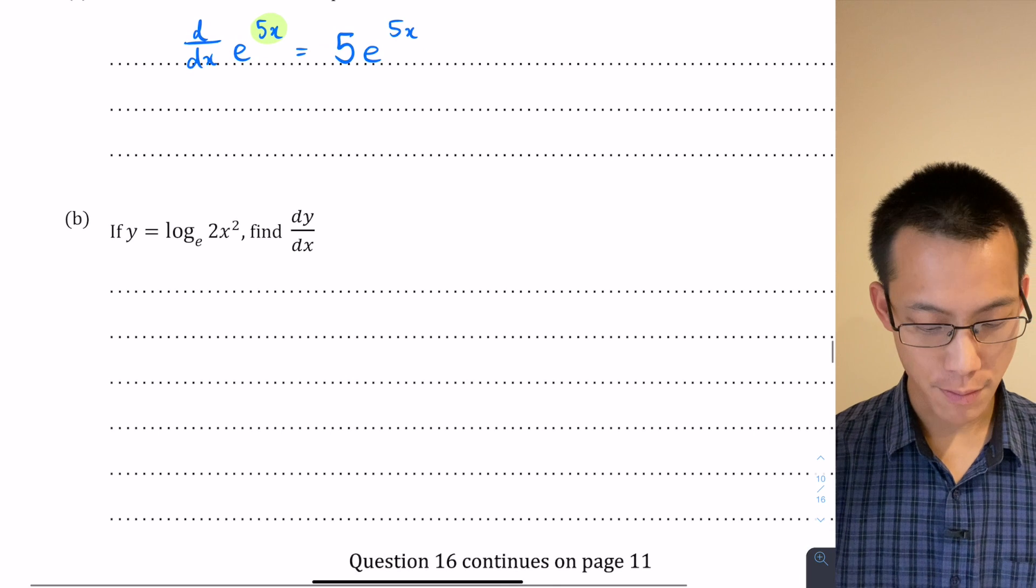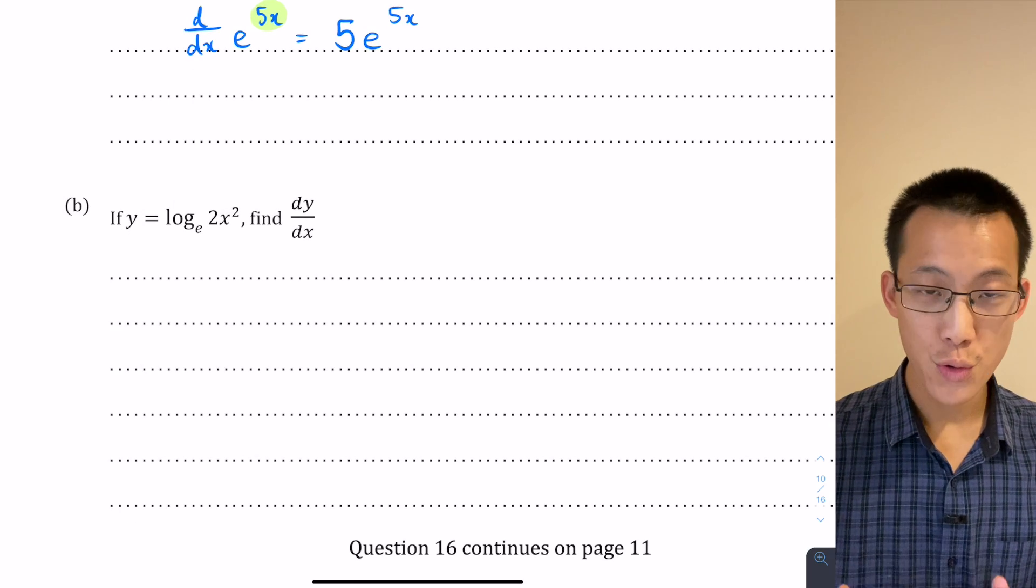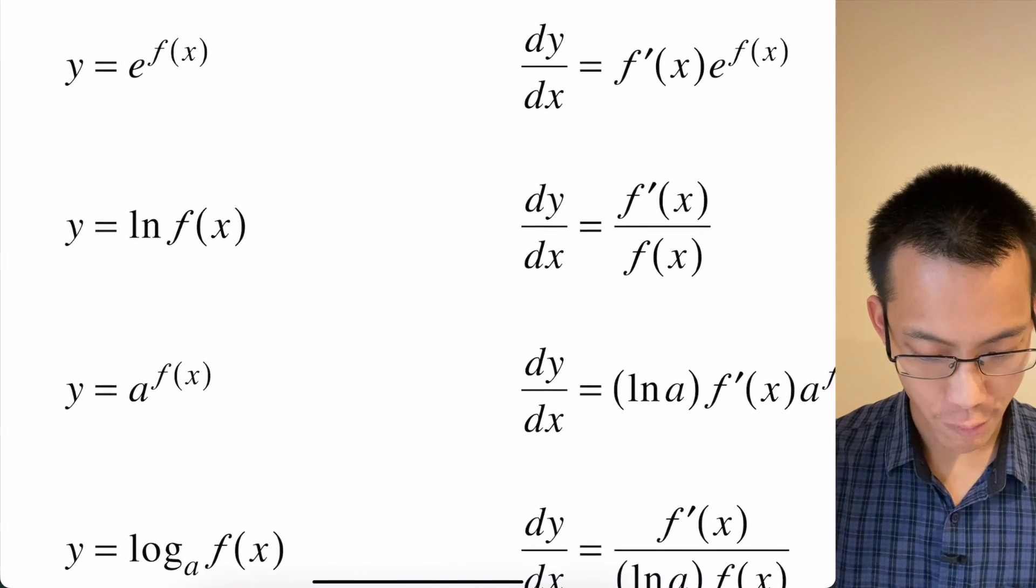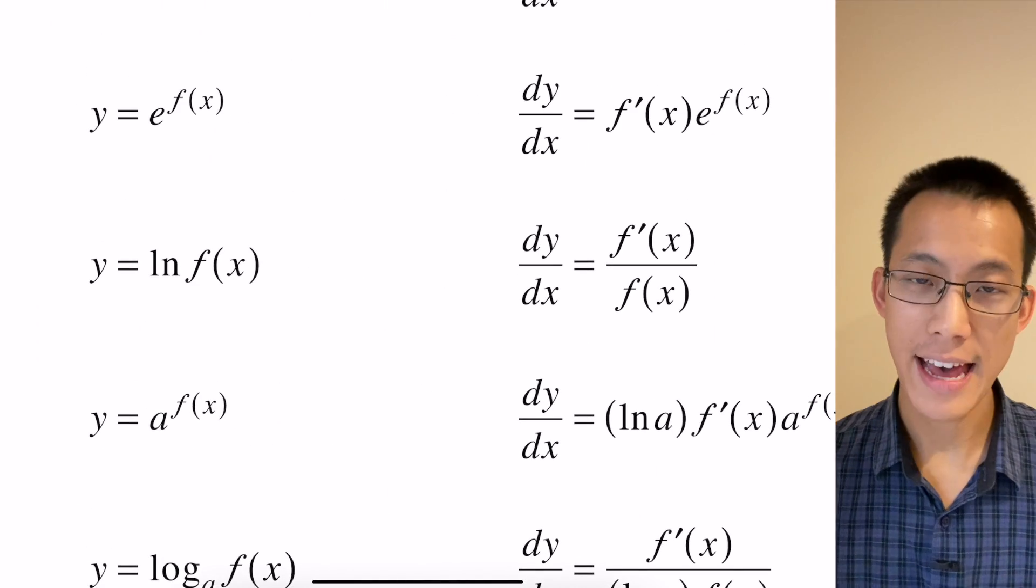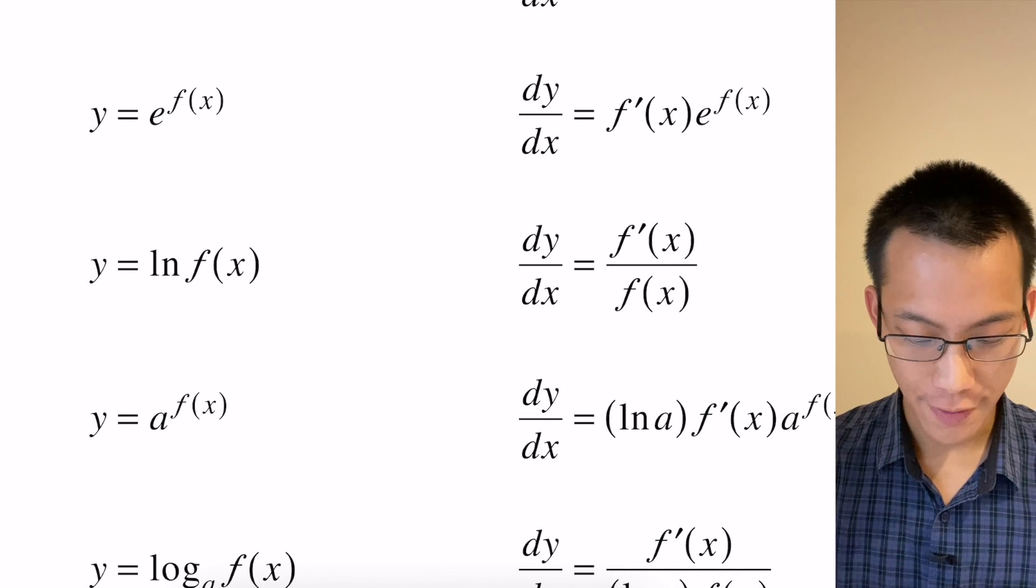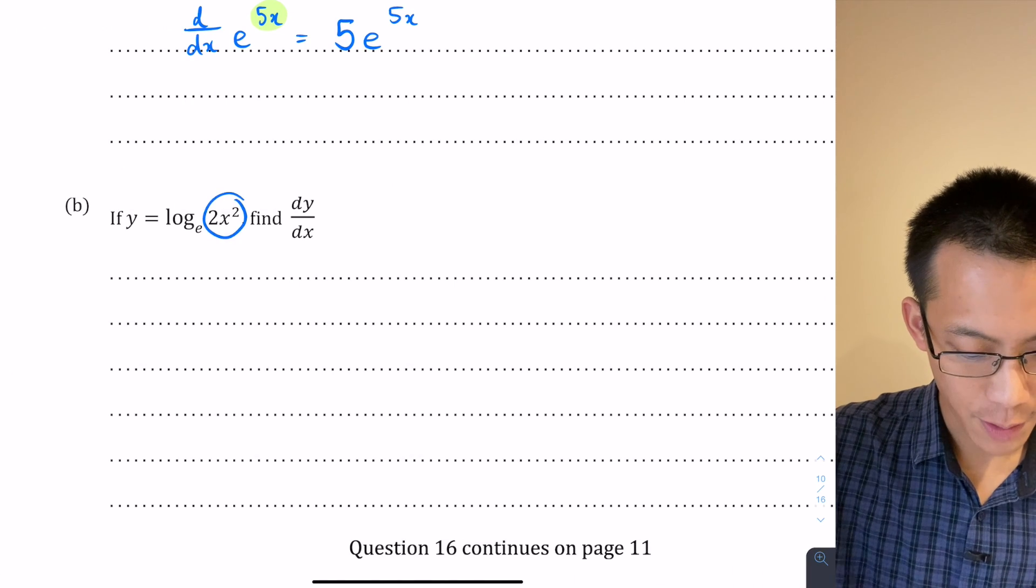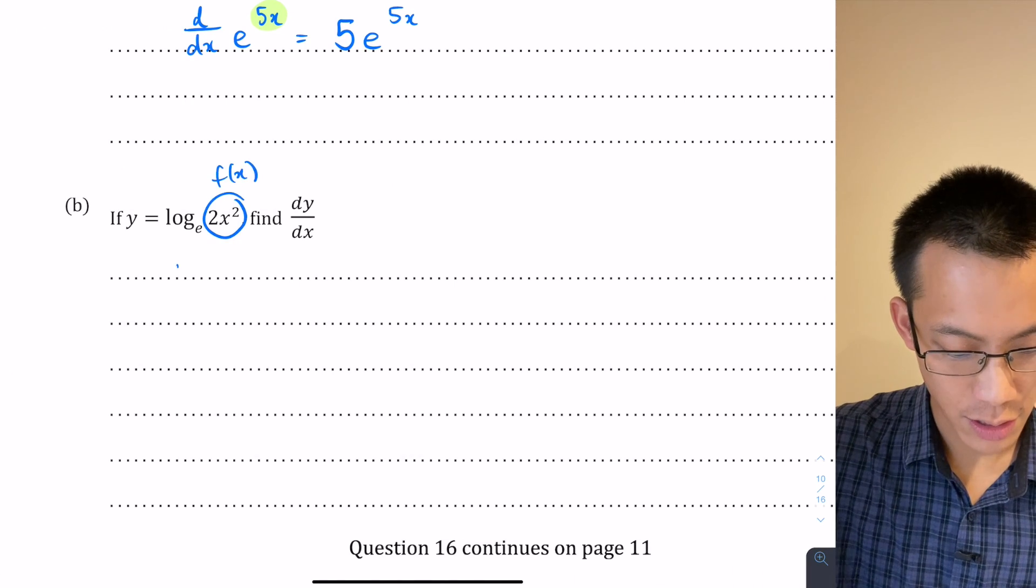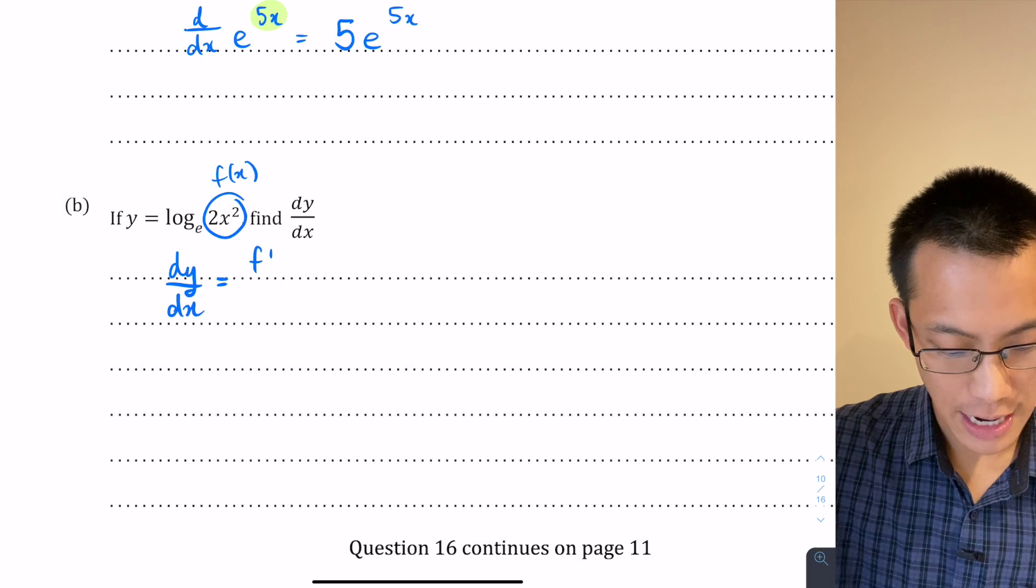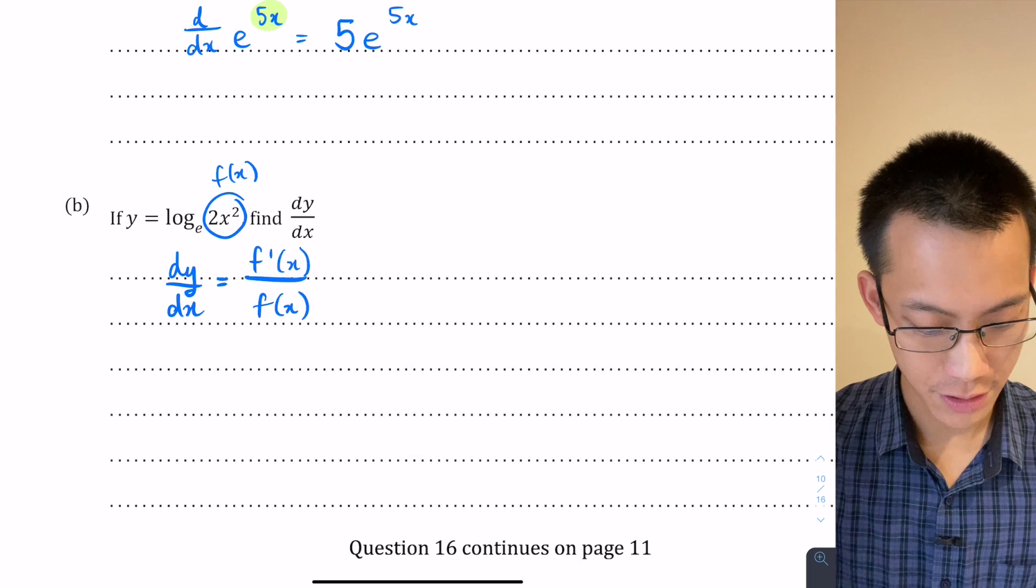Now this one here is a bit more complicated. I've got here log base e of 2x squared. So again coming back to our reference sheet here, y equals ln f of x, that's the same as log base e of f of x. So I'm going to use this result. I'm going to call that f of x. So dy on dx will equal f dash x on f of x.